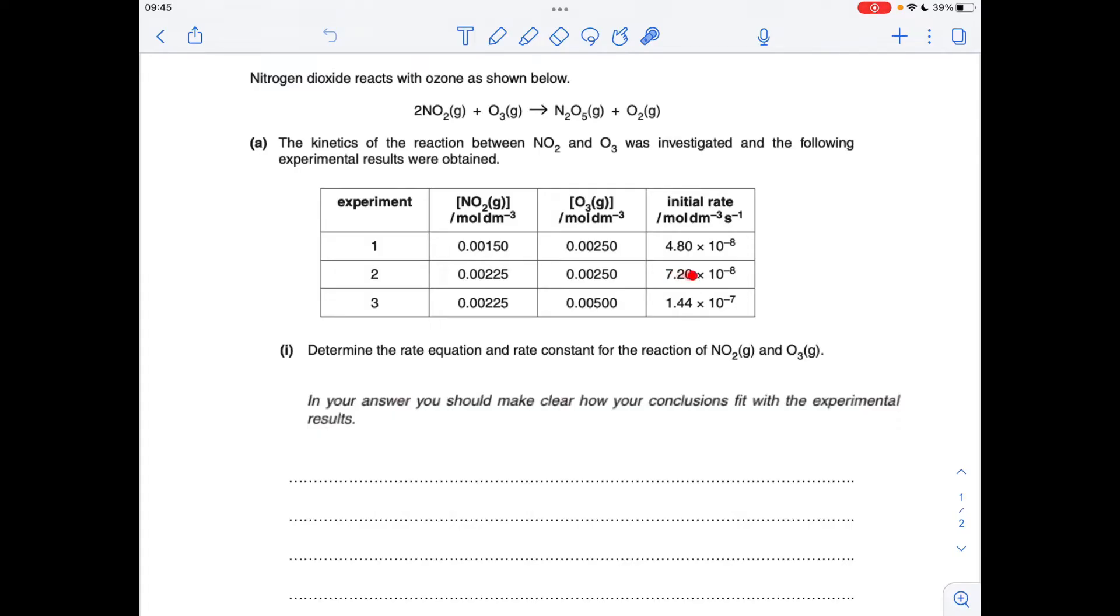And then if we put that over that, we can see that that's 1.5 times bigger than that. So we've got direct proportionality first order with respect to the NO2.